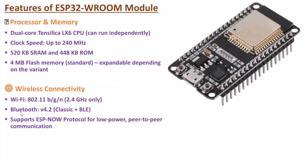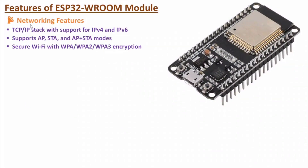Now let me discuss about networking features. Here, when connecting the ESP32 to the internet, it supports IPv4 and IPv6 with the TCP/IP protocol. It also supports access point mode, station mode, as well as a combination of both. It is also having secure Wi-Fi connection with WPA, WPA2, and WPA3 encryption.